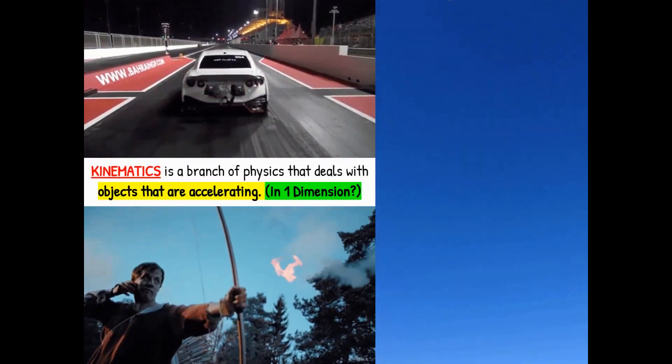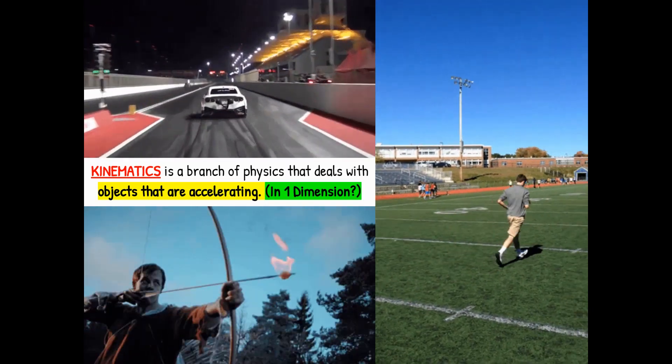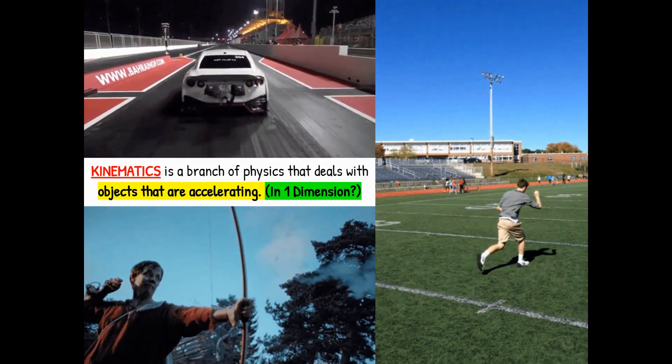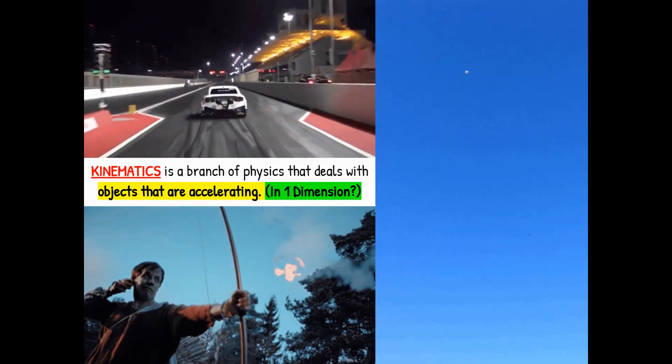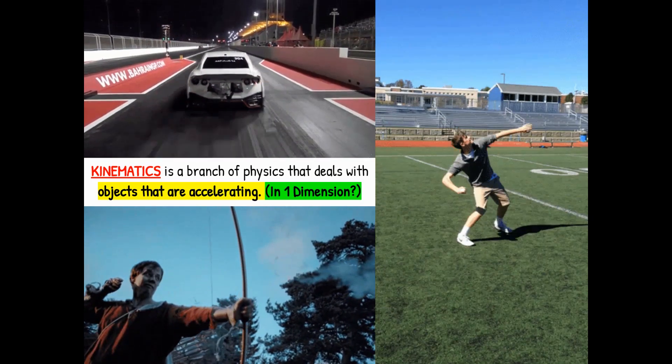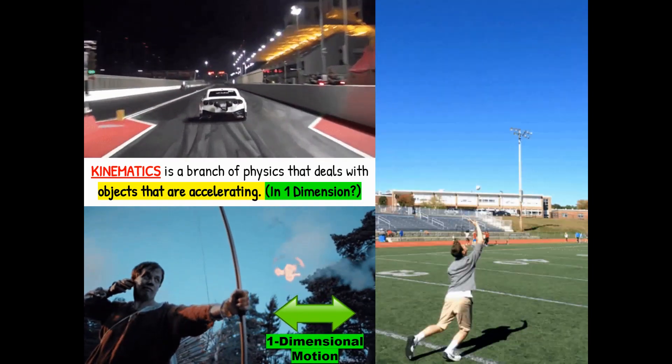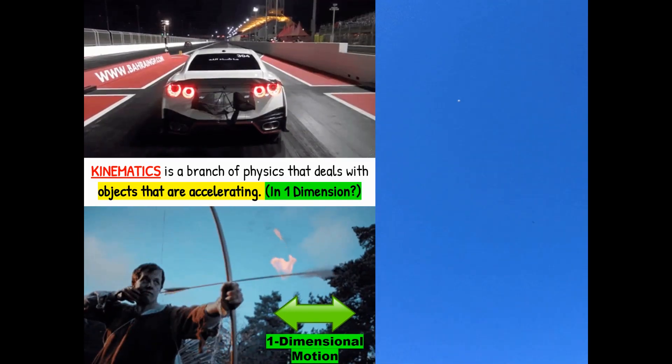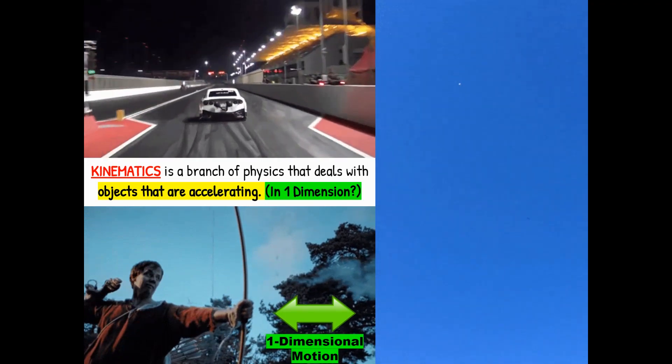So what are we going to learn about in this unit? Kinematics is a branch of physics that deals with objects that are accelerating, and they can accelerate in any number of dimensions. The one that we're going to be focusing on the most is just the first dimension, which means going forwards, backwards, or left and right, or up and down. Here's an example down below. You can see that this archer is shooting an arrow forward, and before he shot it forward, he had to pull it backward. So backwards and forwards are the only two important directions here, so we consider that just one-dimensional.